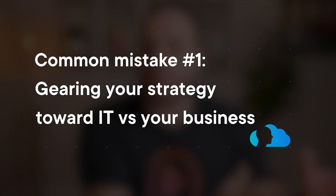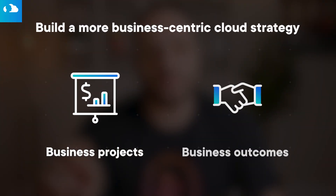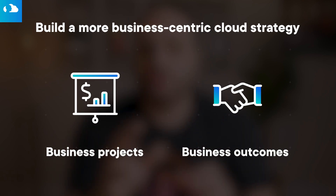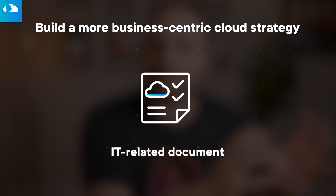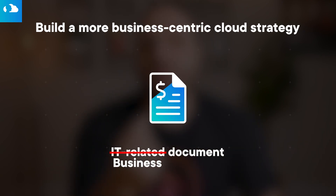Common mistake number one: building a document that is geared more towards IT rather than the business. There are no IT projects — there are only business projects and business outcomes. The sooner IT comes to this realization, the better. Don't write an IT-related document; write a business document that an executive can understand and can value.